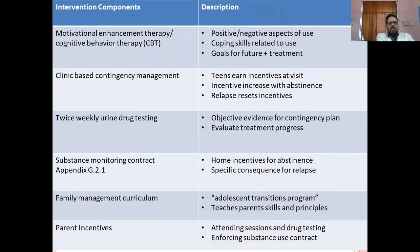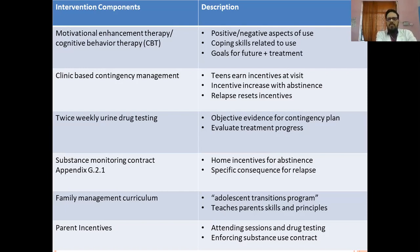Intervention competence components include motivation enhancement therapy and cognitive behavioral therapy addressing positive and negative aspects of use, coping skills related to use, and goals for future treatment. Clinical-based contingency management involves teens earning incentives at visits, with incentives increasing with abstinence and resetting at relapse. This includes twice-weekly urine drug testing as objective evidence for the contingency plan, to evaluate treatment progress and monitor substances, with a contract, home incentives for abstinence, and specific consequences for relapse.